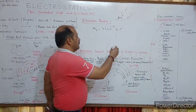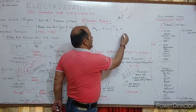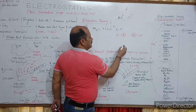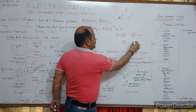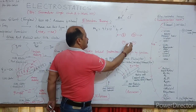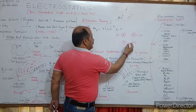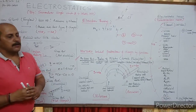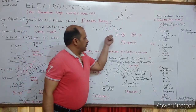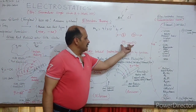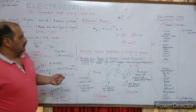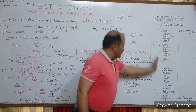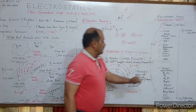Like charges repel each other and unlike charges attract each other. By using this concept of attraction and repulsion, you can make your own triboelectric series at home through experiments.